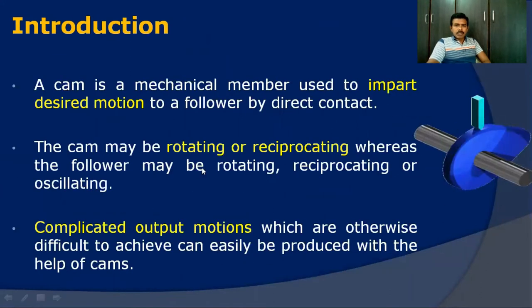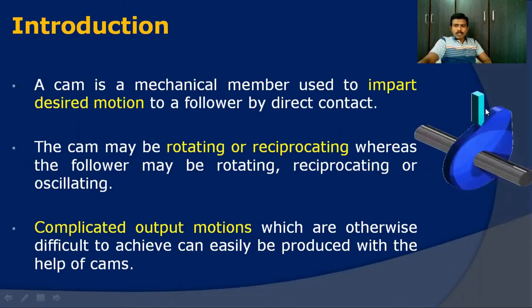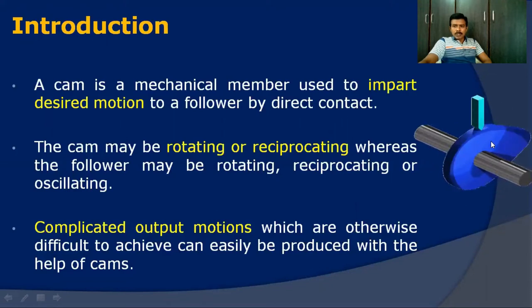Now we will see what is meant by a cam and follower, and the definitions in the introduction. Looking at an animated view of a simple cam and follower: the blue one represents a cam which is mounted on a shaft — that is the camshaft, which is the rotating and driving member. The cam mounted on the shaft via keyways is also subjected to rotation. The shape of the cam is irregular, and due to the rotation of the cam, the follower takes corresponding motion — which is reciprocating or translatory motion in the vertical direction.